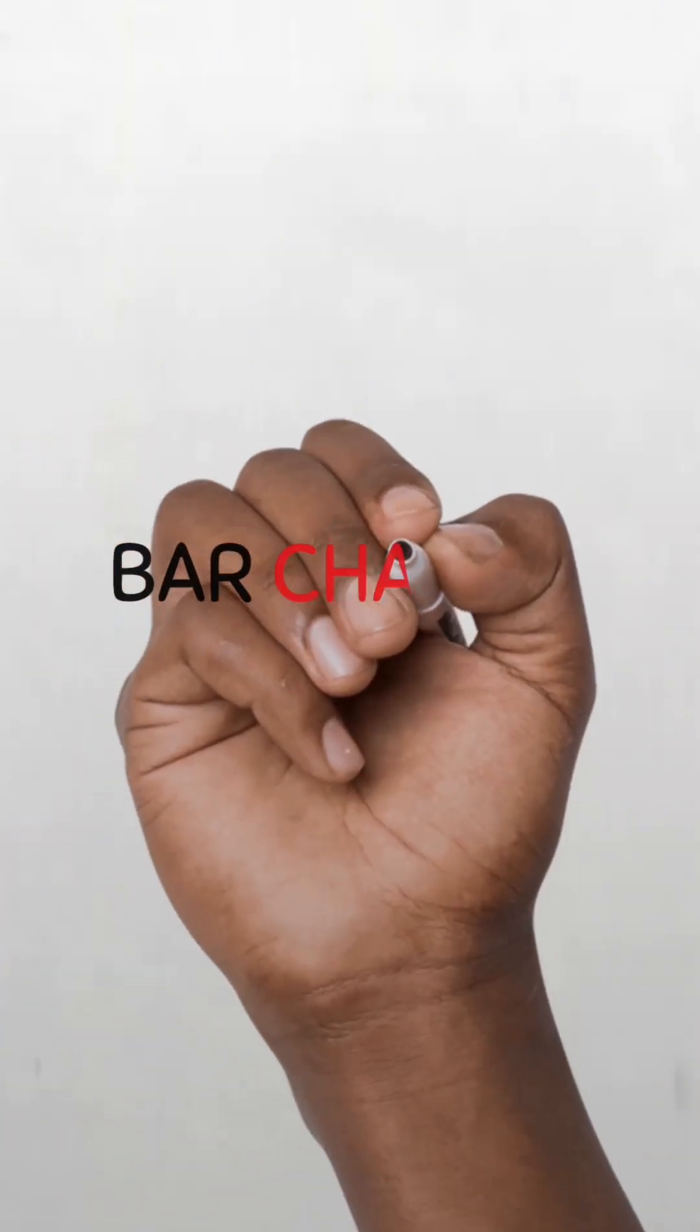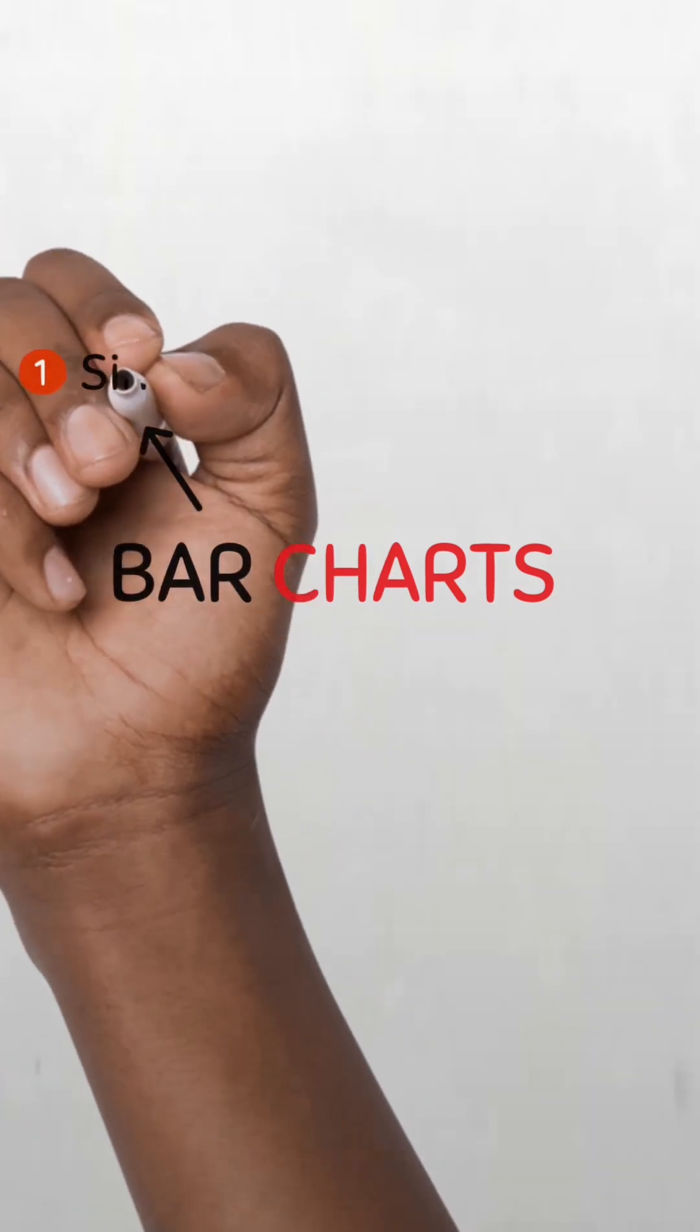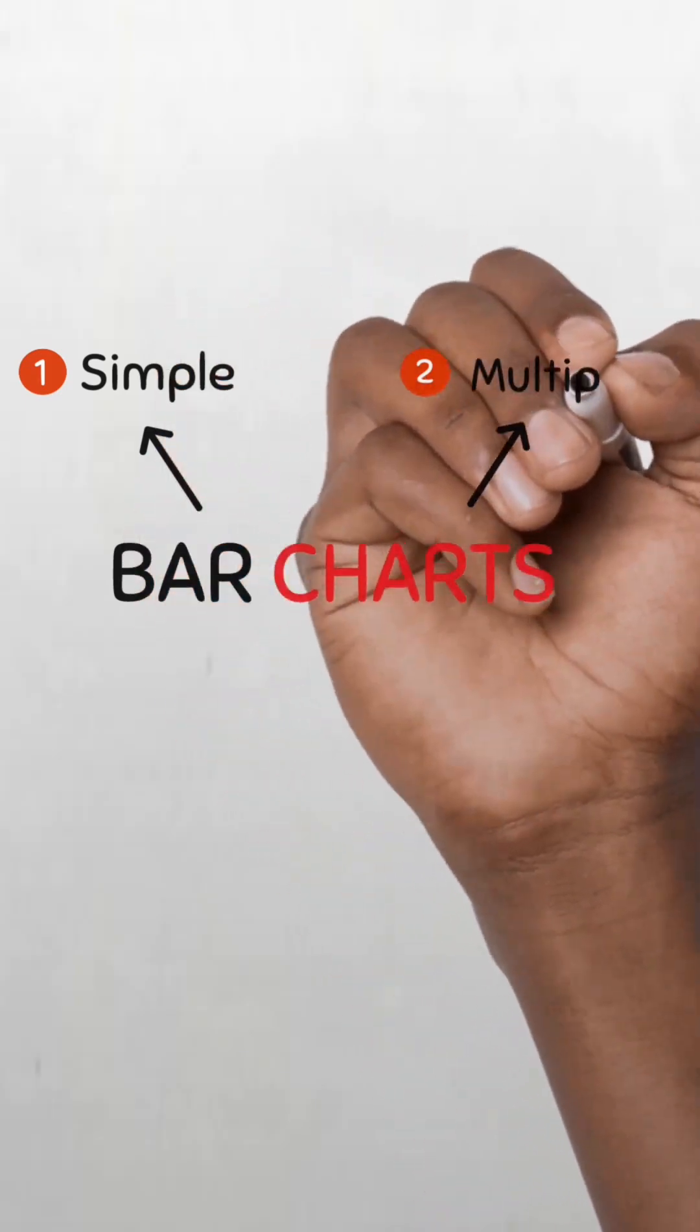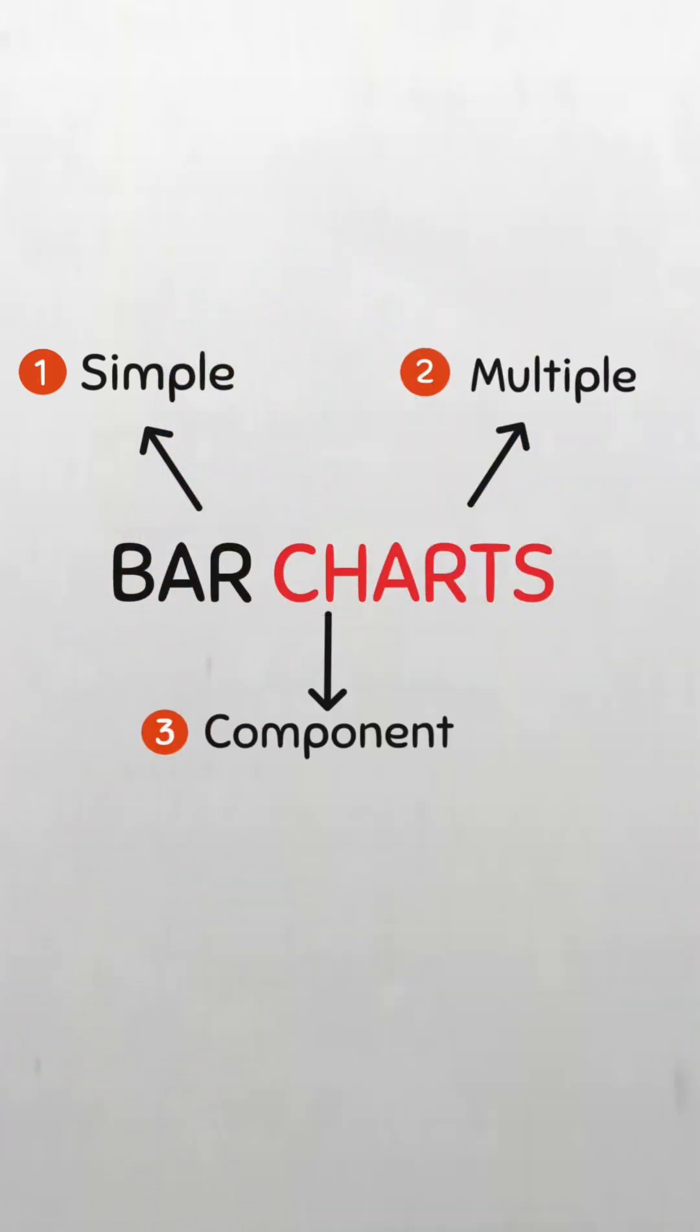There are several types of bar graphs depending on the type of data you want to present and the story you want to tell. The three most common ones include a simple bar chart, multiple bar chart, and component bar charts.